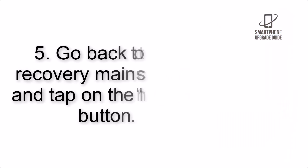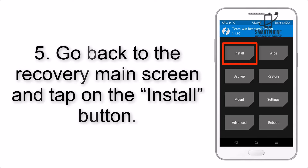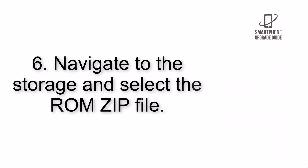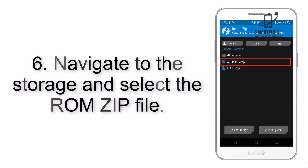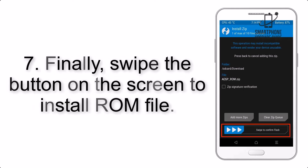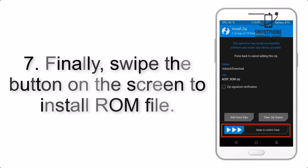Step 5: Go back to the recovery main screen and tap on the Install button. Step 6: Navigate to the storage and select the ROM zip file.